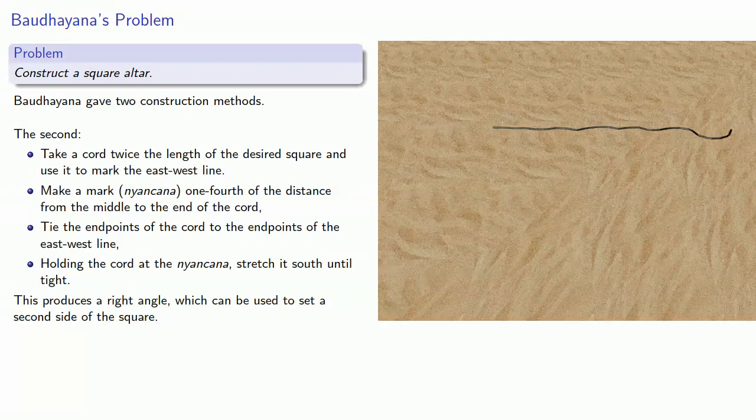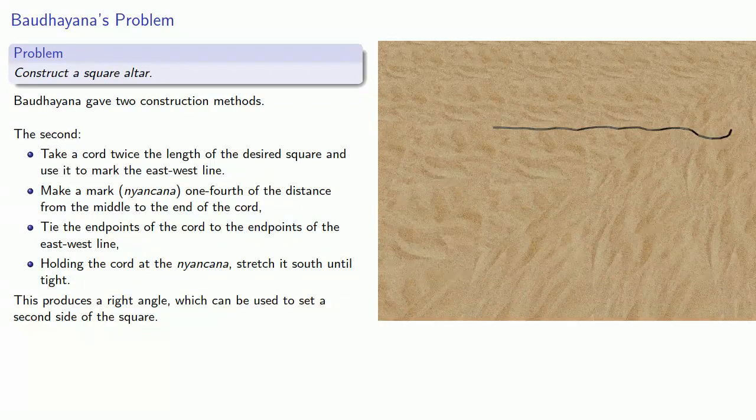Now, these chords are typically unmarked. So you might wonder, how do we mark a nyankana? How do we find one-fourth of the distance from the middle to the end of the chord? If you think about that, we can actually do that by successively folding the chord in half.